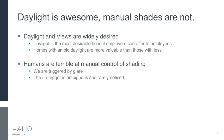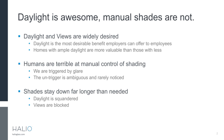Most of our buildings use manual shading to protect against glare and discomfort, and humans are terrible at controlling their manual shades. Well, actually, we're only half terrible. We're good at lowering the shade when we experience glare, but we're not good at raising the shade when that glare goes away. So what happens is shades go down and stay down, daylight is squandered, and views are blocked.